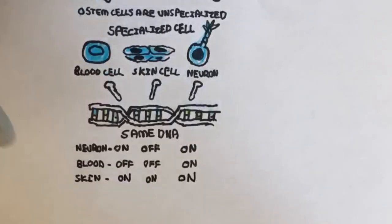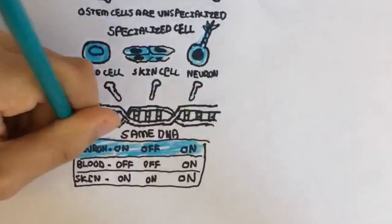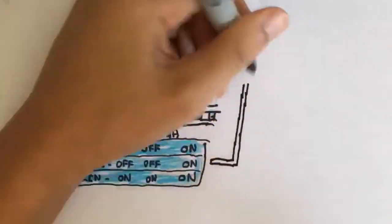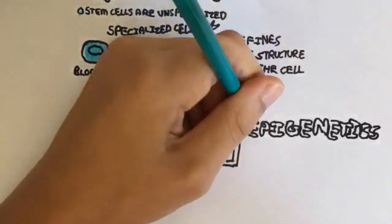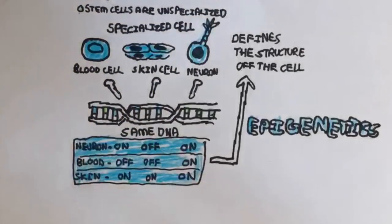The structures they have are defined by certain markers and epigenetics, which turn them on or off. Therefore, only some genes are expressed, and they are different in your red blood cells than in your neurons. That is worthy of a whole new video.